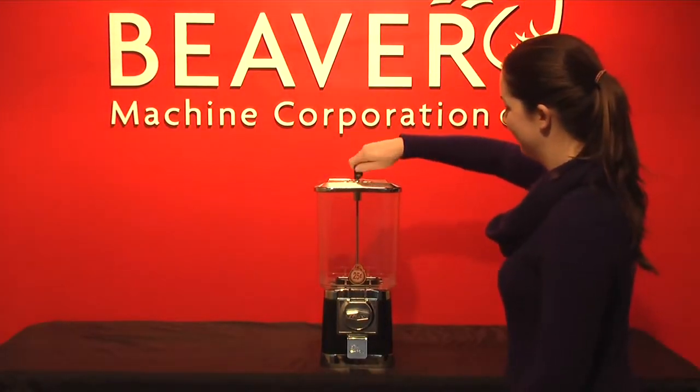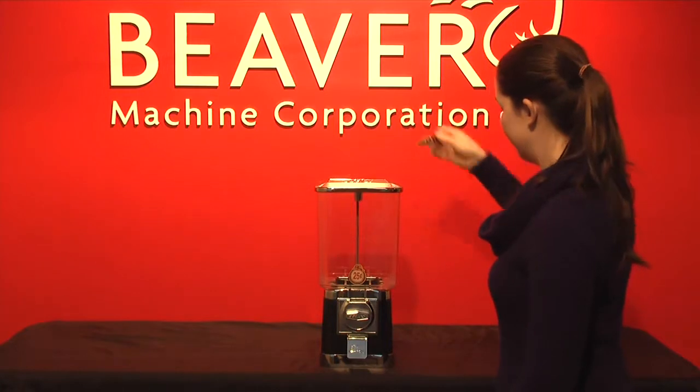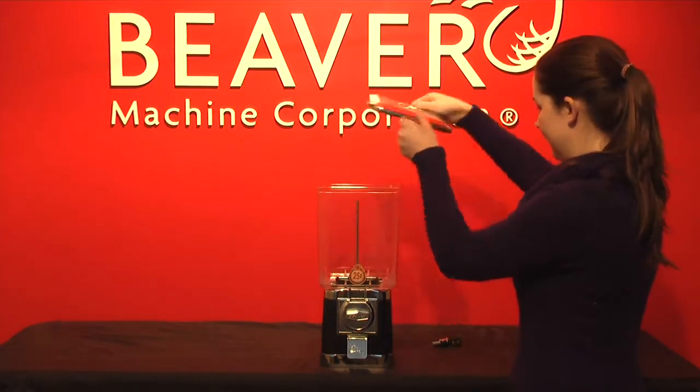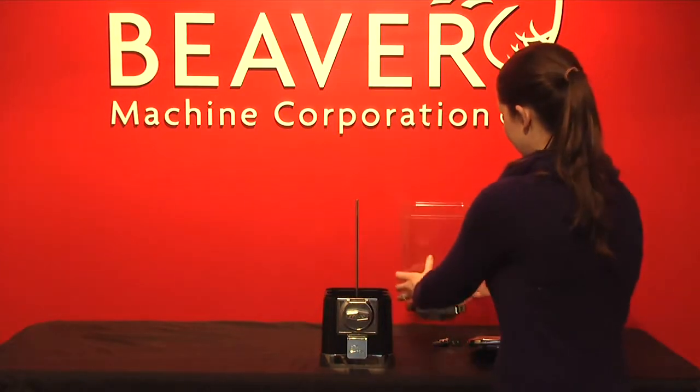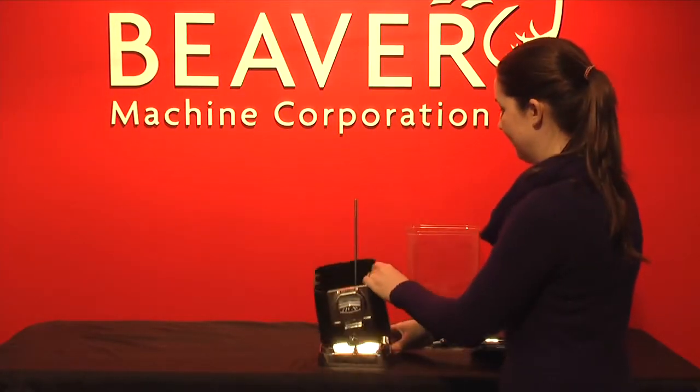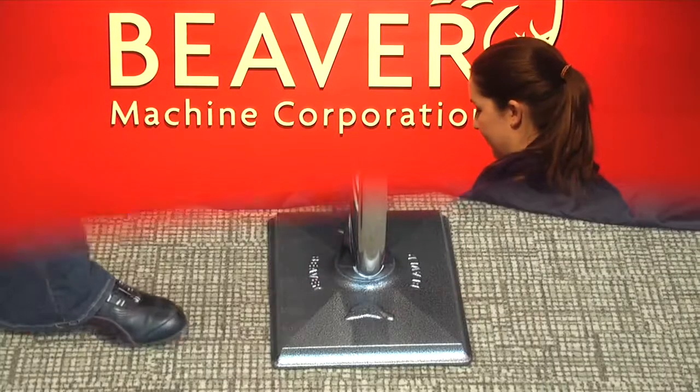Place the key in the lock and turn counter clockwise to remove the lock. Take the lid off and then remove the service head. Take the body out of the base and your machine is ready to mount on your stand.